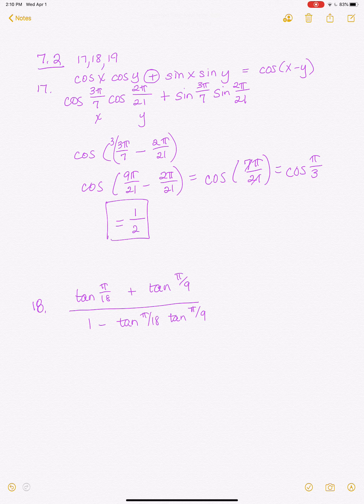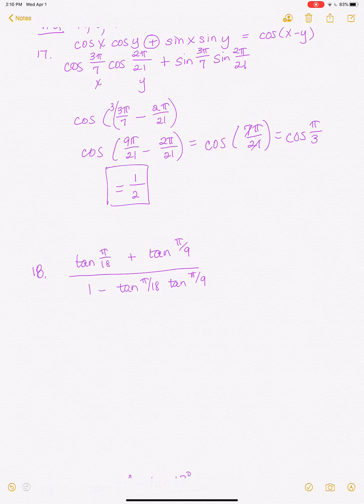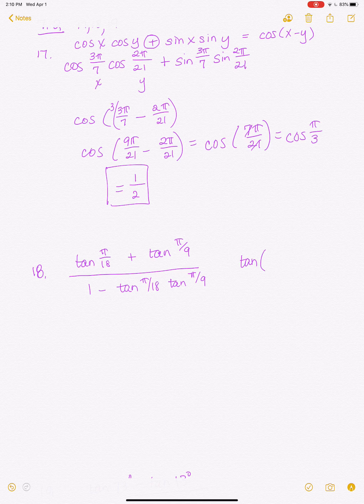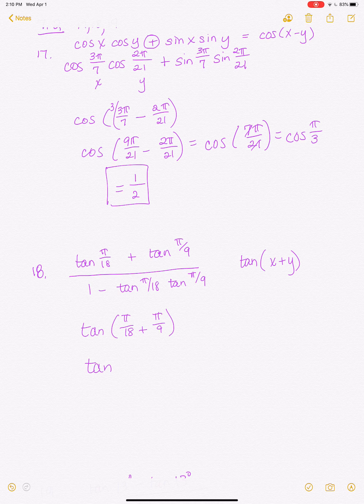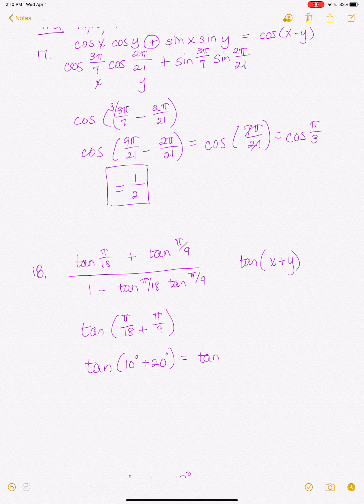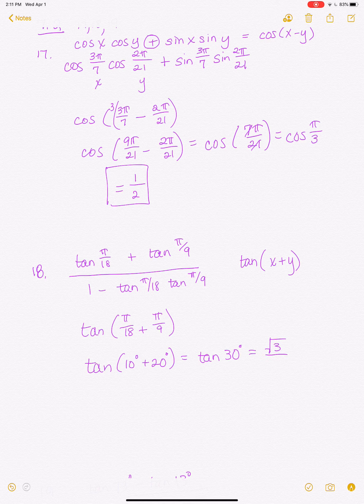Alright, 18 is not going to be any different than that. You just have to recognize what formula this is. This is the formula for addition. The addition formula for tangent. So really, this is going to be the tangent of pi over 18 plus pi over 9. And let's just do it in degrees if you want to see. You can get a common denominator, of course, and do the same thing there. Or you could just say, well, this is the tangent of 10 degrees plus 20 degrees, which is the tangent of 30 degrees. And we know that the tangent of 30 degrees, that exact value is the square root of 3 over 3.